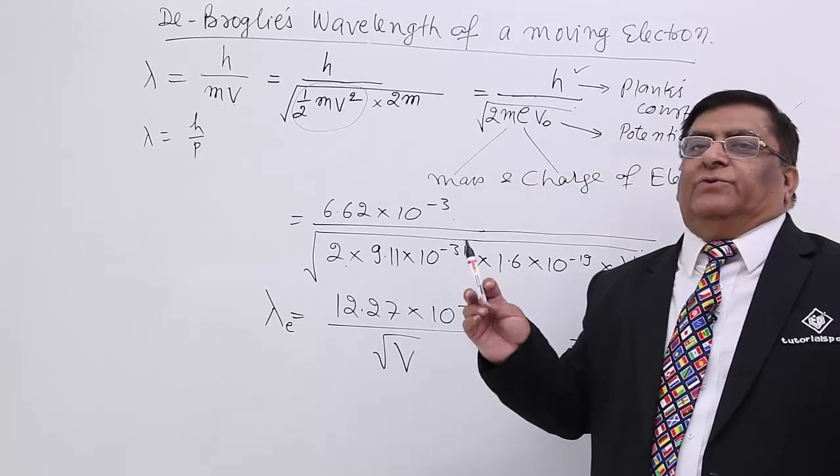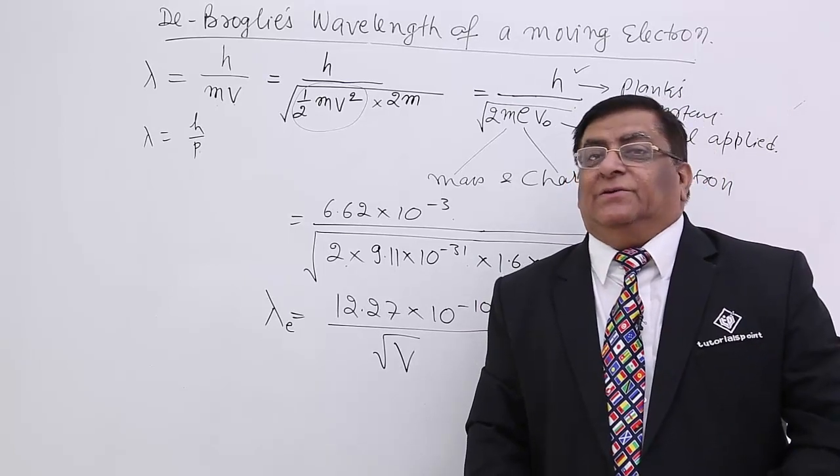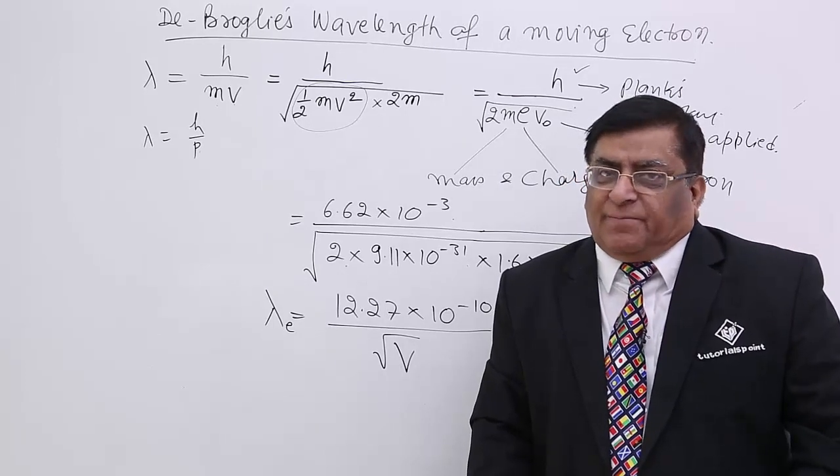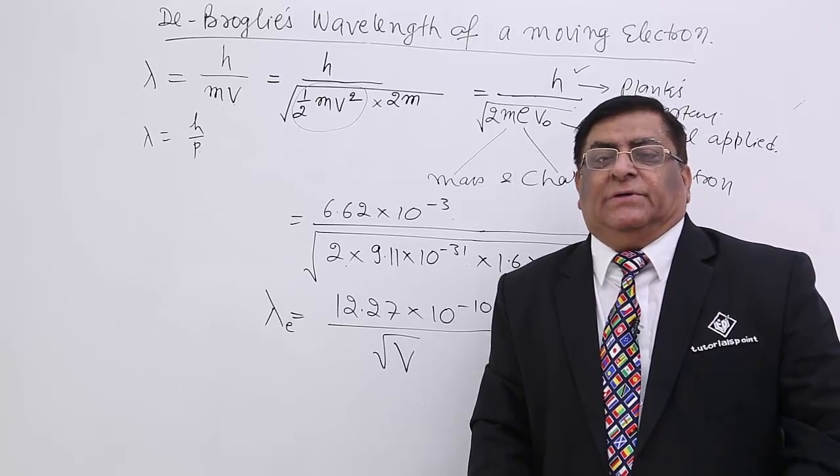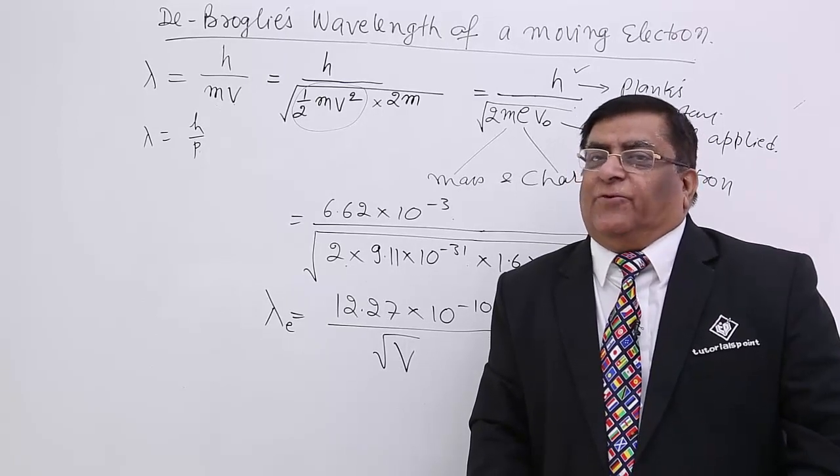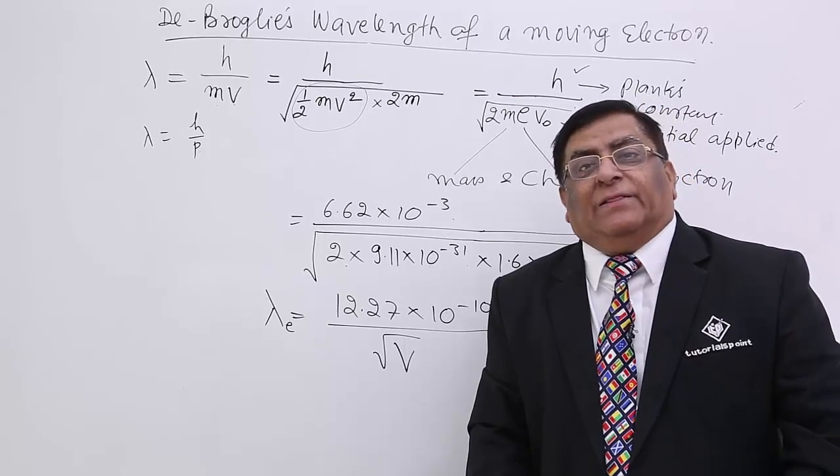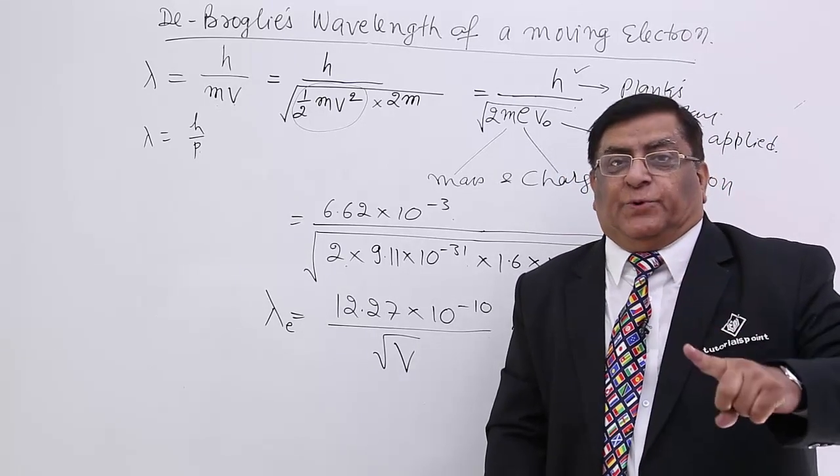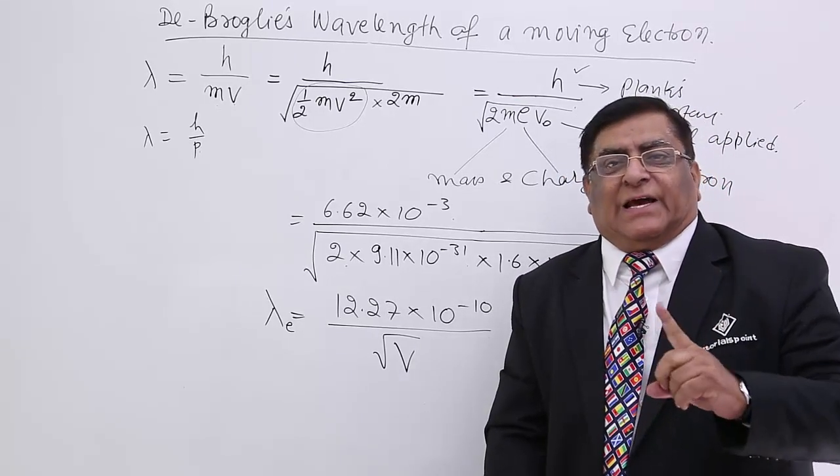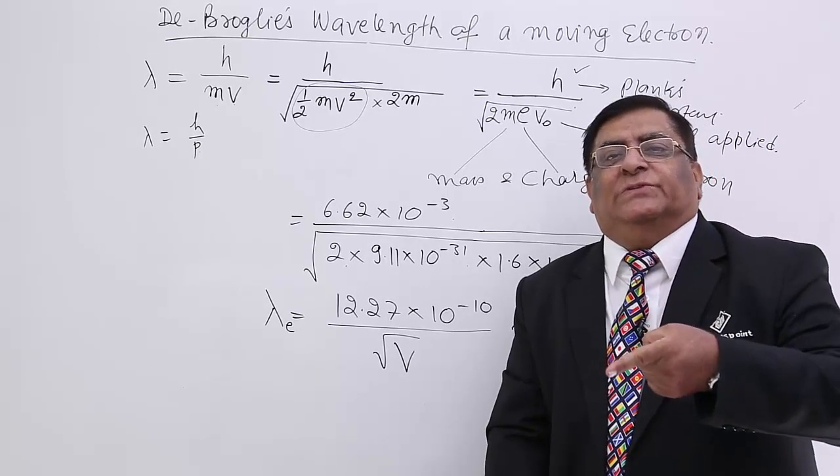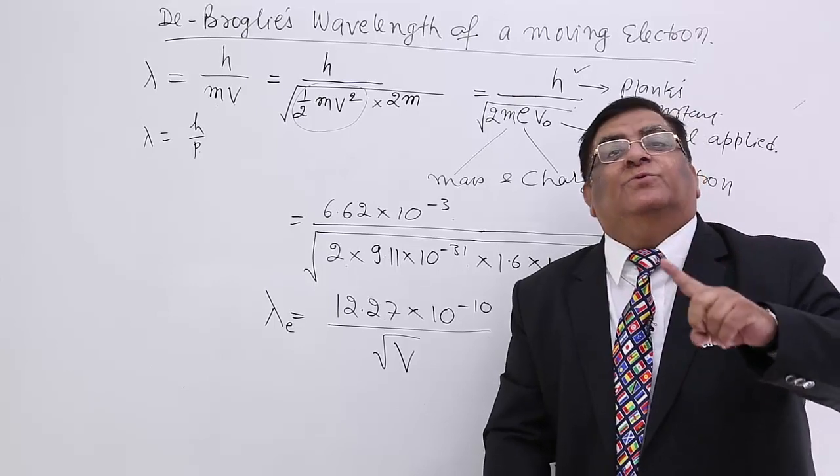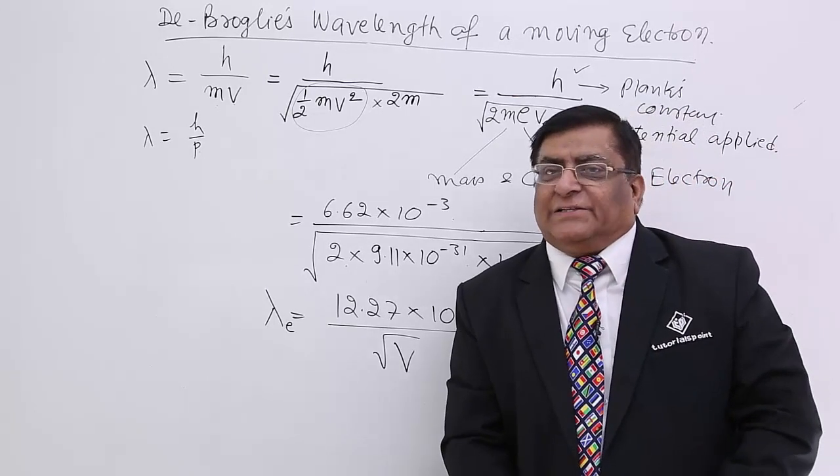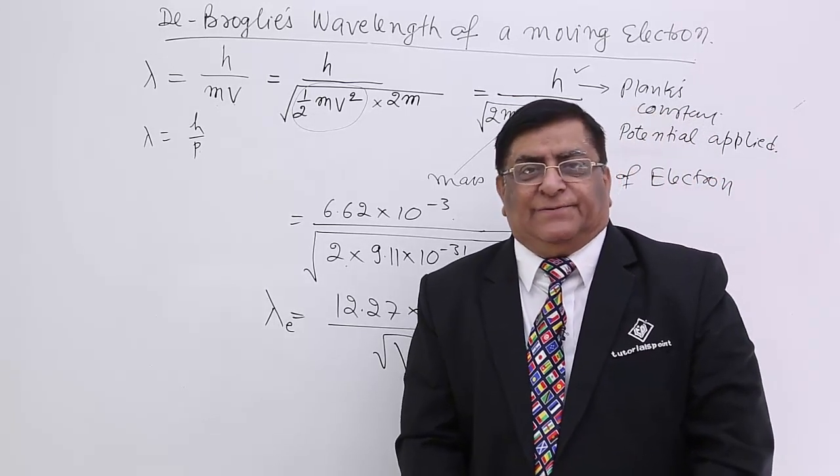At that time, we called it de Broglie's hypothesis, not a law. Later, there were experiments that proved electrons do move in the form of waves and have the wavelength predicted by de Broglie. Then it was proved that de Broglie's hypothesis is correct, material actually moves in the form of waves, and matter waves do exist. But that was done after de Broglie's lifetime. We will see that experiment in our next lecture. Thank you.